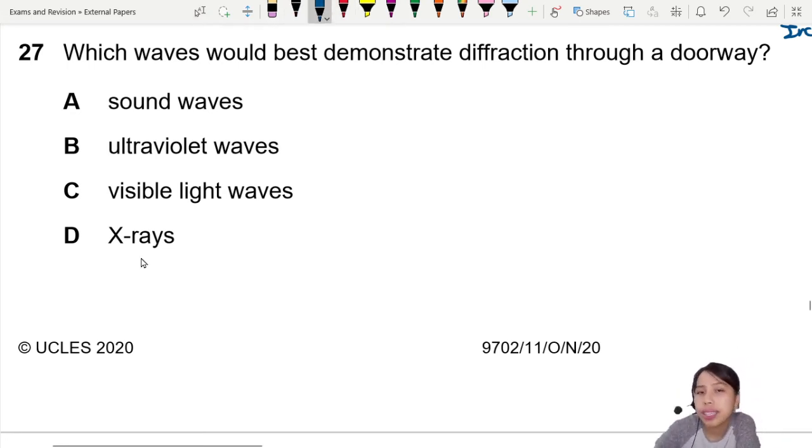The principle of diffraction works like this. If you have a barrier and you want the most diffraction, then you look at the gap of the barrier. Let's call this a certain gap.